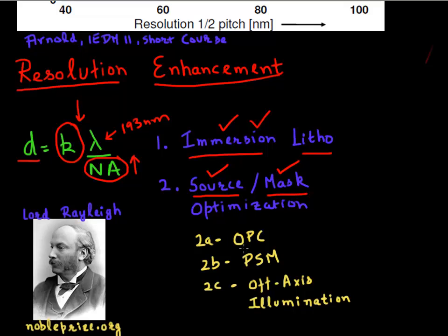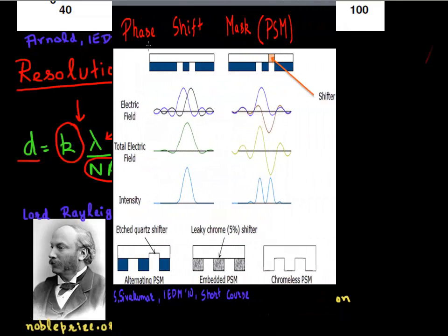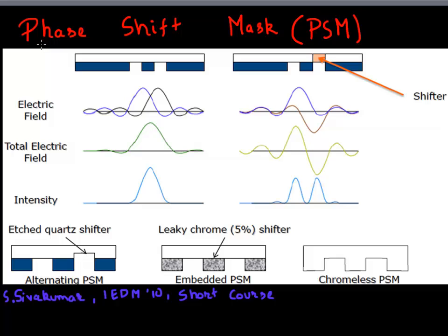What you can do is you can do a proximity correction, you can introduce a phase shift, or you can do off-axis illumination. Let me describe these one by one. The first technique in this bag of tricks deals with interference of light, and it's called phase shift mask or PSM.